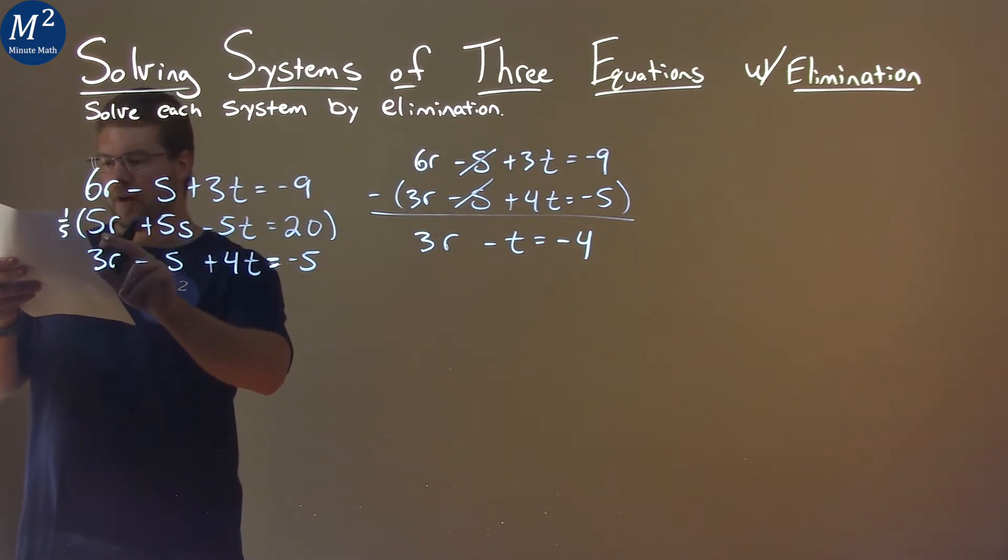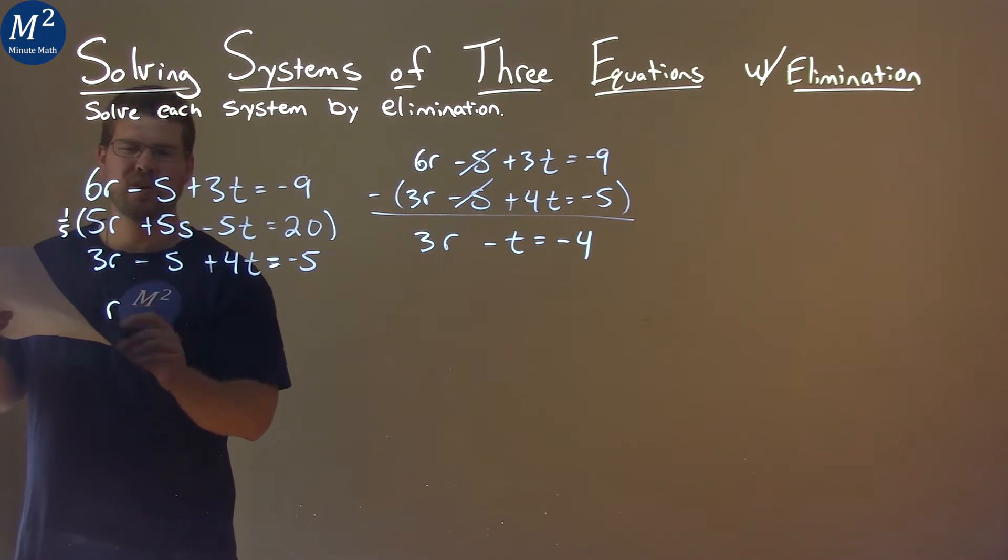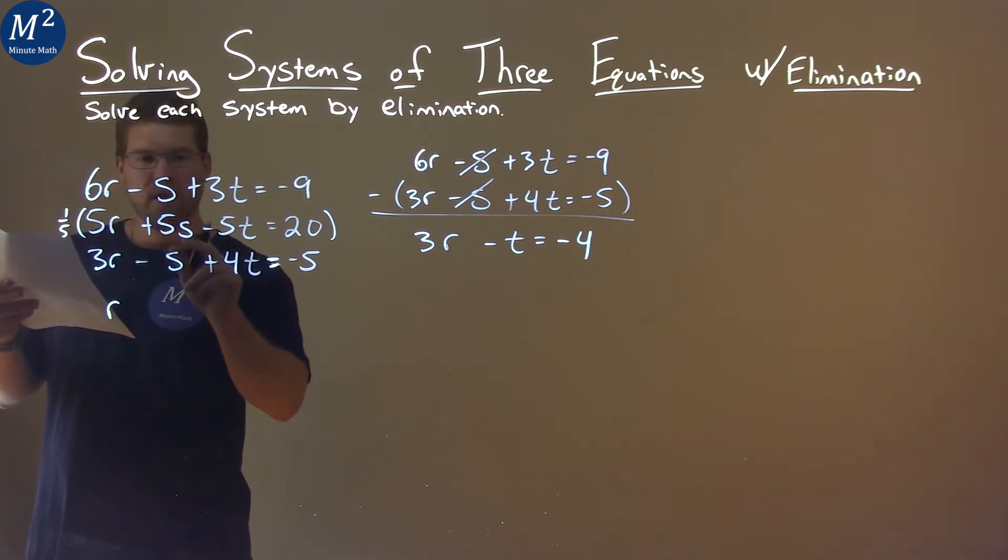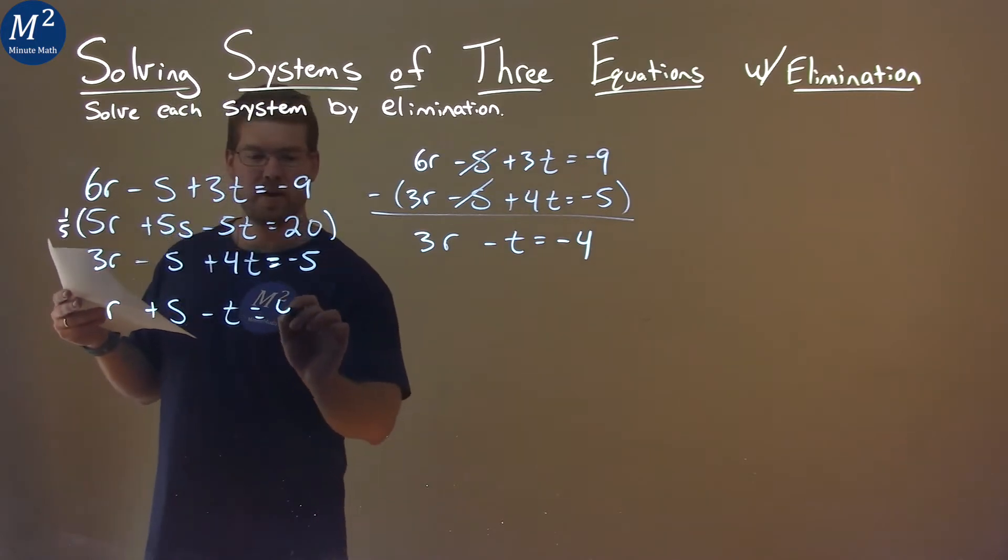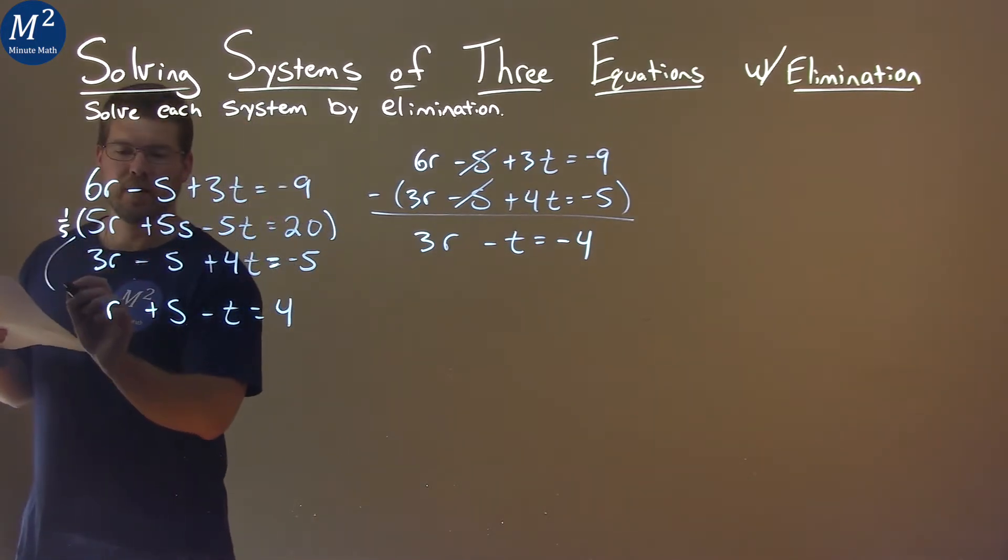One fifth times 5r is just 1r, or divide by 5, same thing. Divide this by 5, and we have just an s. Divide this one by 5, we have minus t. And then 20 divided by 5 is 4. That's a much simpler looking equation.